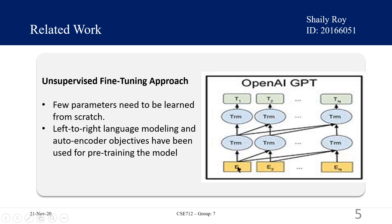In the GPT architecture, E1, E2, through EN are the inputs and TRM blocks represent the attention layers. The attention takes information from the left tokens. It basically takes input left-to-right, which means whenever you try to interpret a token, you need to use only the left information. The model is forced to make sense of a token only from its left context. This is a basic limitation of the unsupervised fine-tuning approach, because it only uses information from the left part and sometimes it may be wrong.